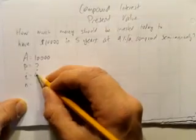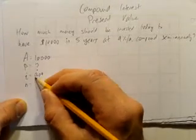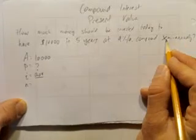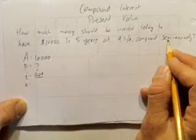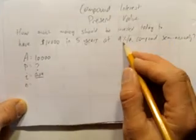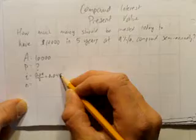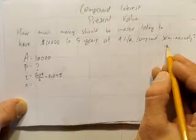Our interest rate is 9%. But remember, we're getting 9% split up semi-annually. Semi meaning half, annually meaning year. So every half a year, we get our interest. So we don't get 9% once, we get 9% split in half. In other words, we get 4.5% twice a year, semi-annually.